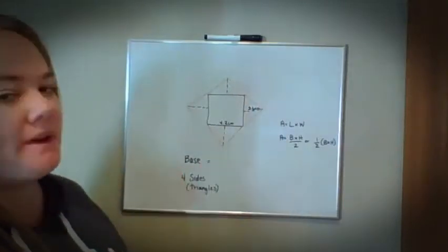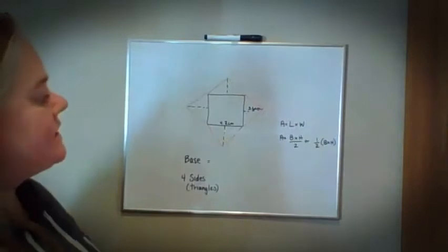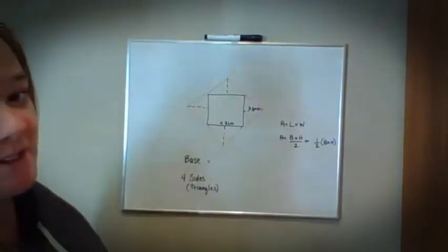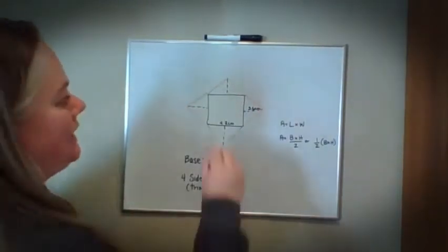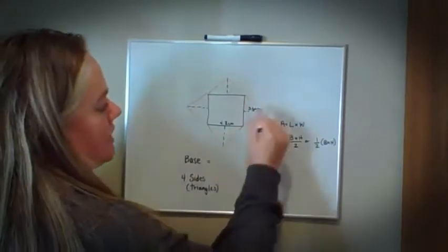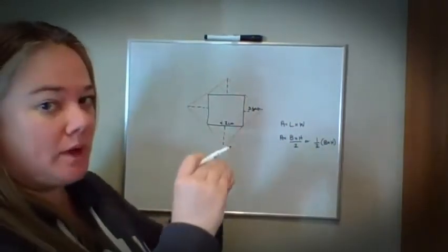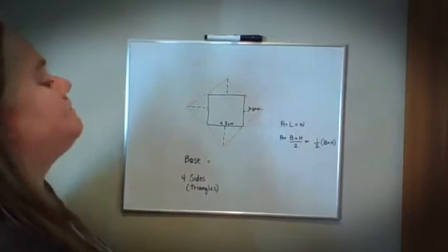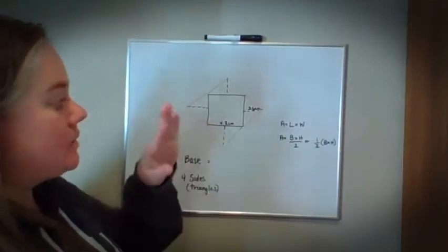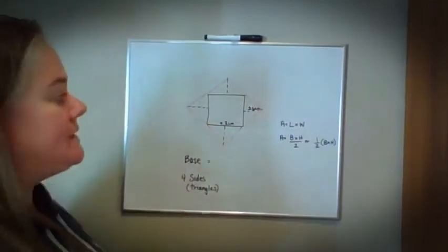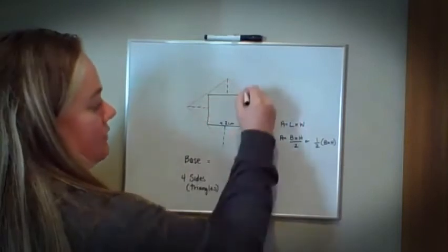In a square base pyramid, you have a square as your base, and then you have four triangles that come up to one point, which is why you have that pyramid. So in order to find the area, I'm going to separate it into multiple pieces. I have my square first.